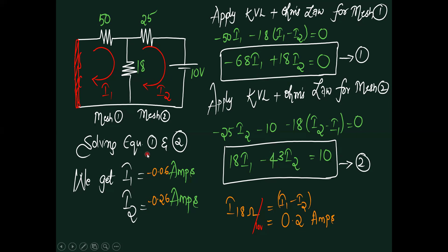Solving those two equations, we get the values of I1 current and I2 current. The difference of those two currents will give us the information of current flowing across 18 ohms. It is approximately 0.2 amperes.